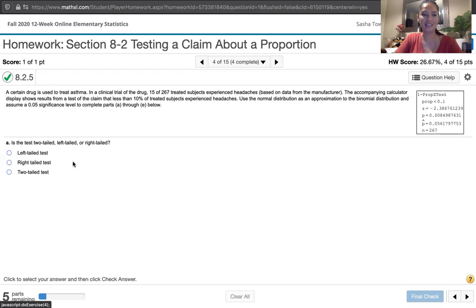First of all, it asks us if the test is left-tailed, two-tailed, or right-tailed. The way we determine whether it's left-tailed, two-tailed, or right-tailed is we look at that claim, or actually not the claim, I'm sorry. We look at the alternative hypothesis.